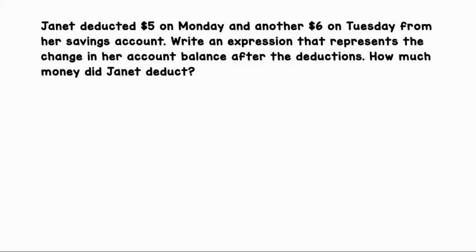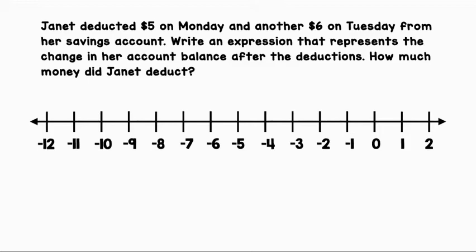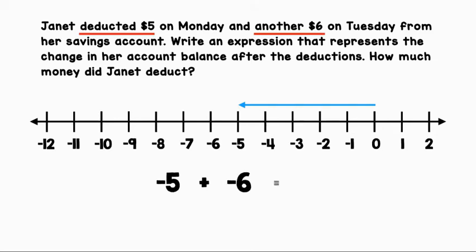Janet deducted $5 on Monday and another $6 on Tuesday from her savings account. Write an expression that represents the change in her account balance after the deductions. How much money did Janet deduct? Let's represent this situation on a horizontal number line. First, she deducts $5, which we can represent with negative 5. Then she deducts another $6, so we can add negative 6. That will give us the total deductions from her account balance.